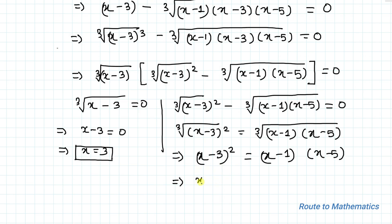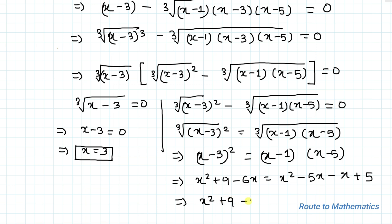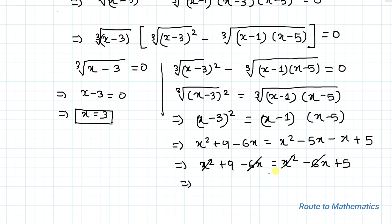Expanding the left side: x squared plus 9 minus 6x. Expanding the right side: x squared minus 5x minus x plus 5, which equals x squared minus 6x plus 5. So x squared and x squared cancel, and negative 6x and negative 6x cancel, leaving 9 equals 5, which means no real solution from this case.